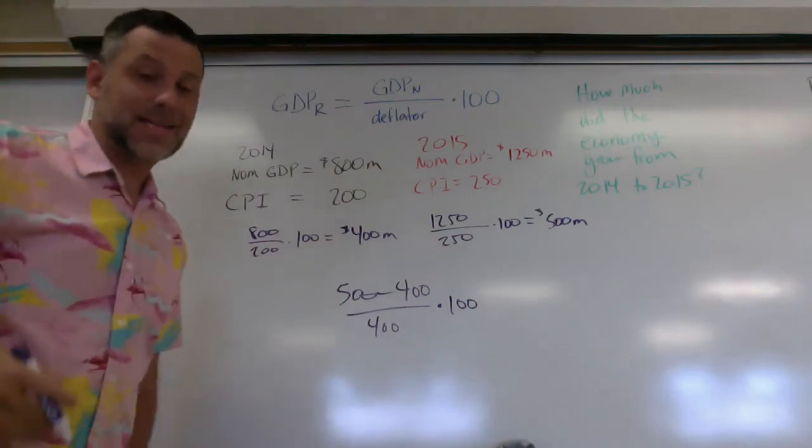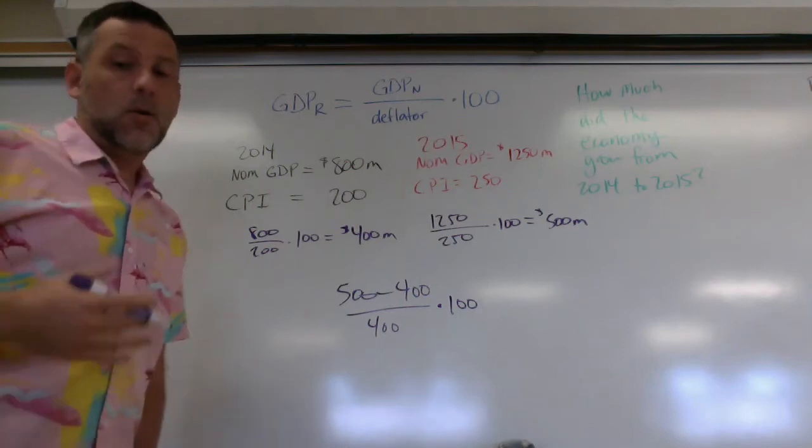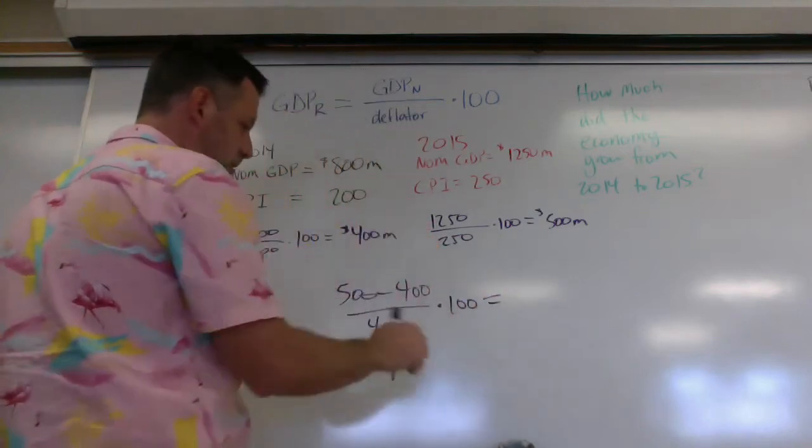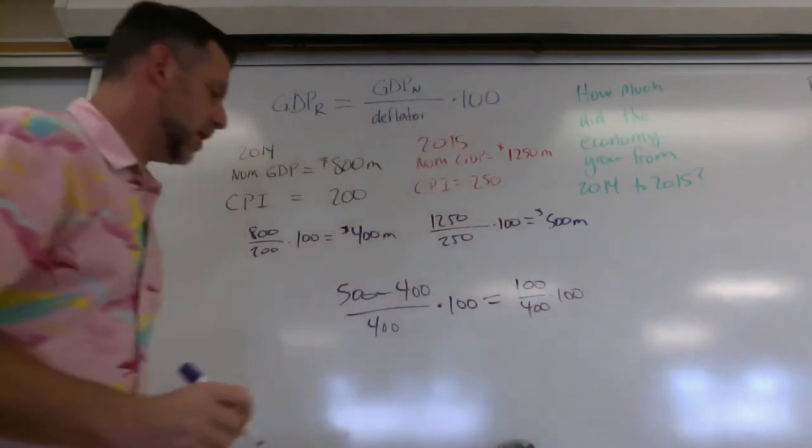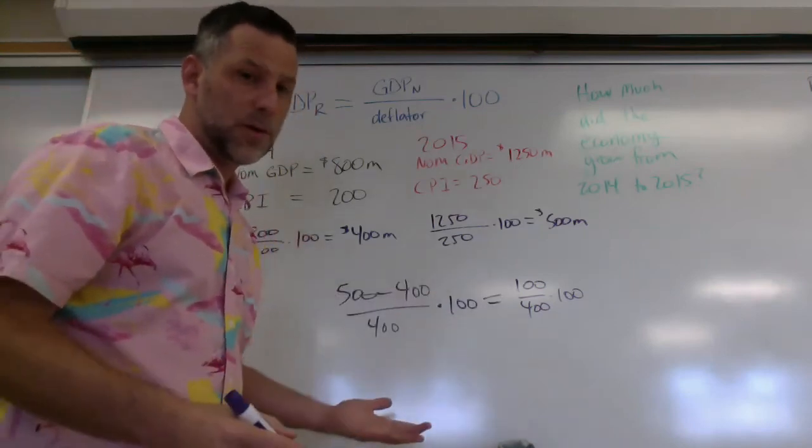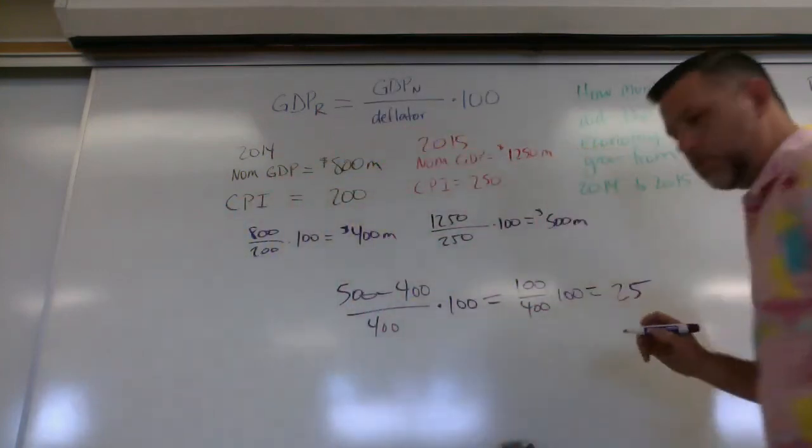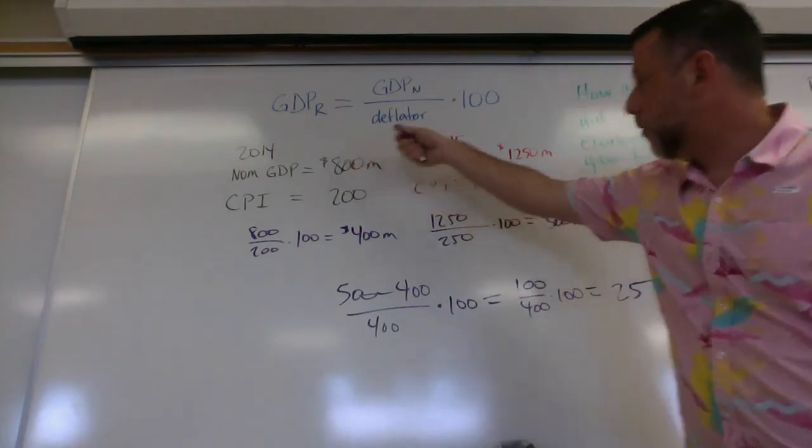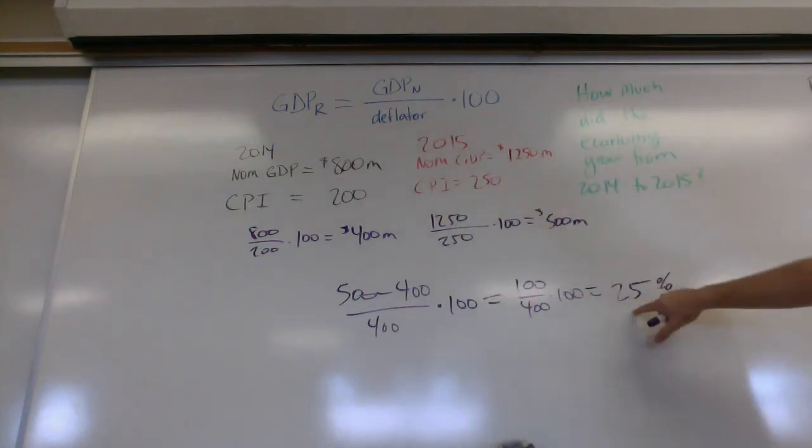And then I solve for that, and it's going to give me a percentage change, or in this case, the percentage change in real GDP, or our economic growth rate. So 500 minus 400 is 100. So I get 100 over 400 times 100. 100 over 400 is one-fourth. One-fourth times 100 is 25. So the answer to our question, how much did the economy grow from 2014 to 2015? We can see right here, the economy grew 25%.